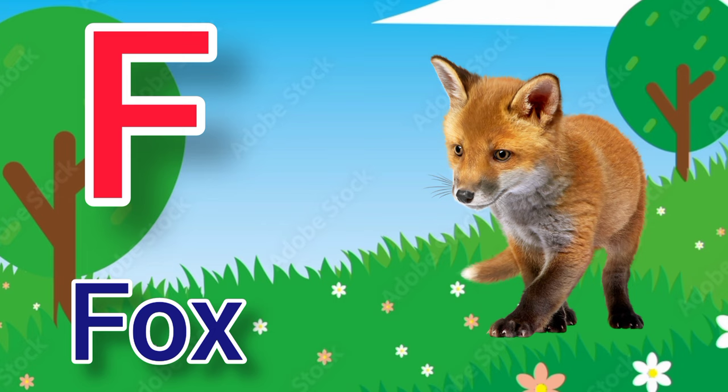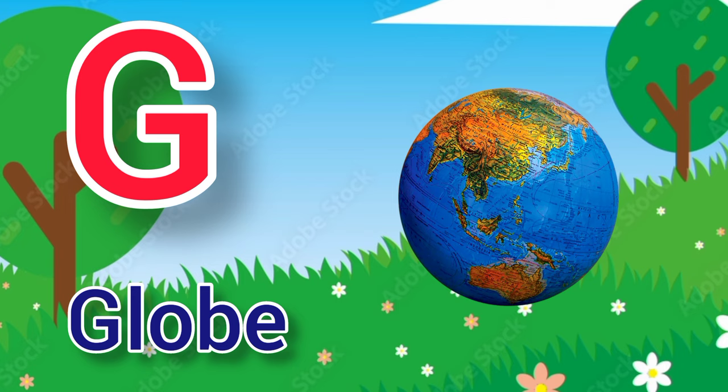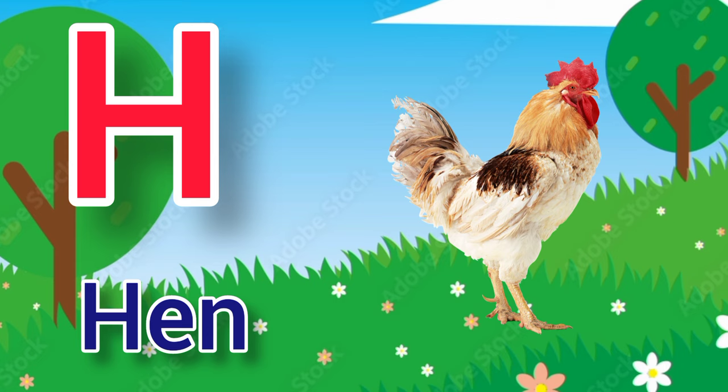G. G for globe, globe means manchit. H. H for hen, hen means murgi.